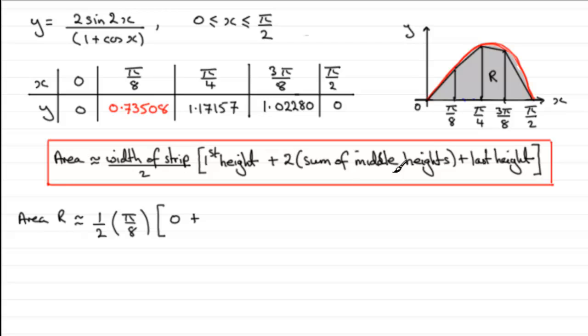And then it's twice the sum of the middle height. So that'd be two times all these three y values. So it'd be two times 0.73508, plus the 1.17157, plus the 1.02280. And then we've got to add to this the last height, which is going to be 0.